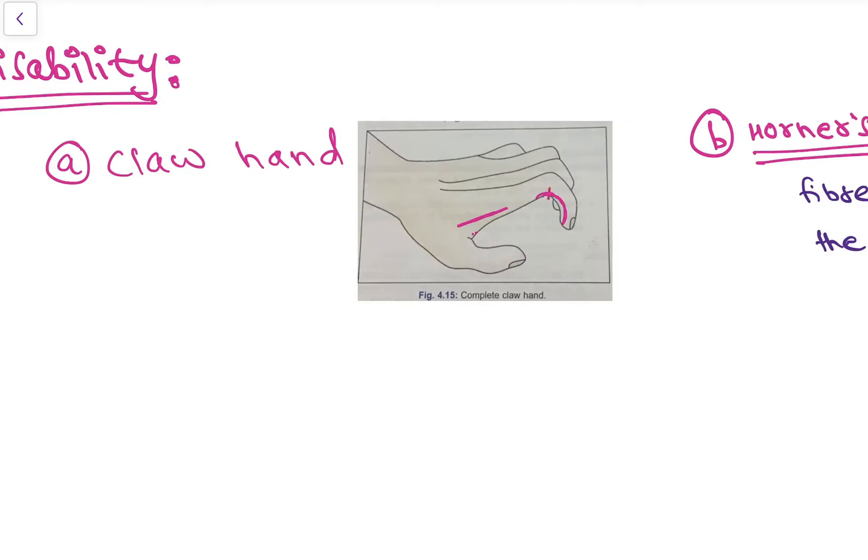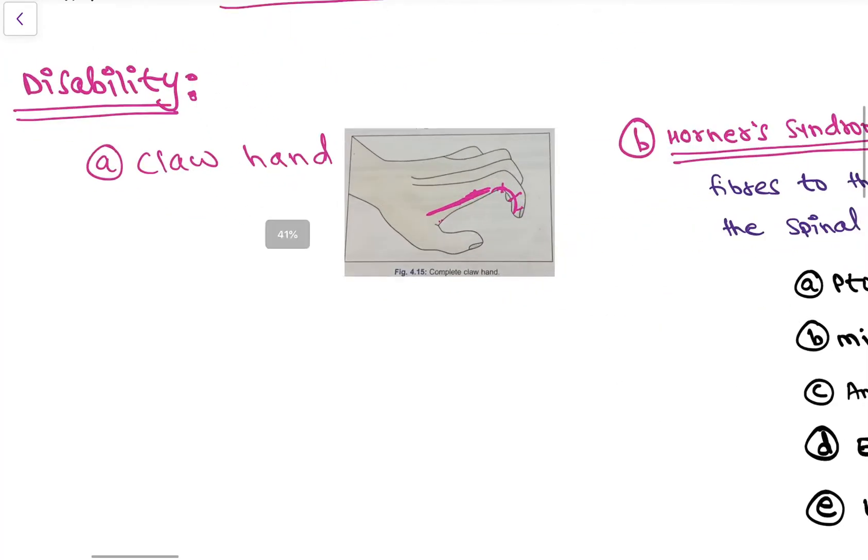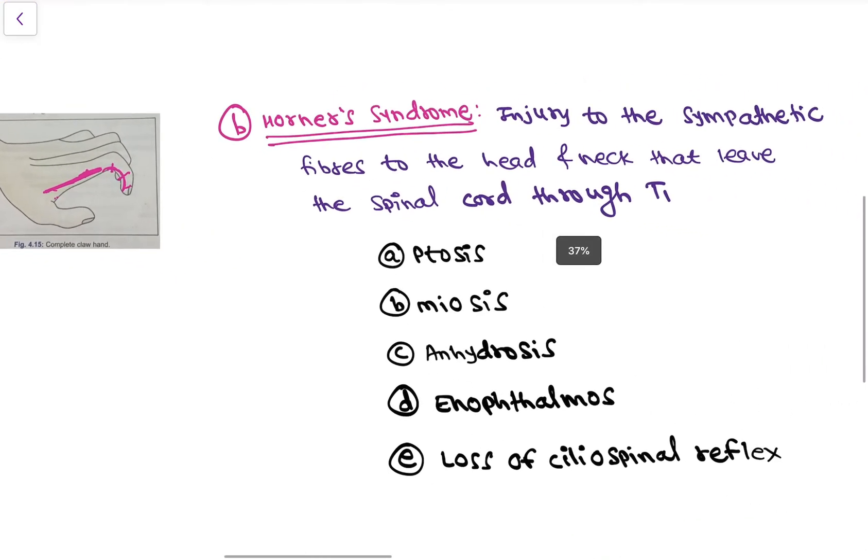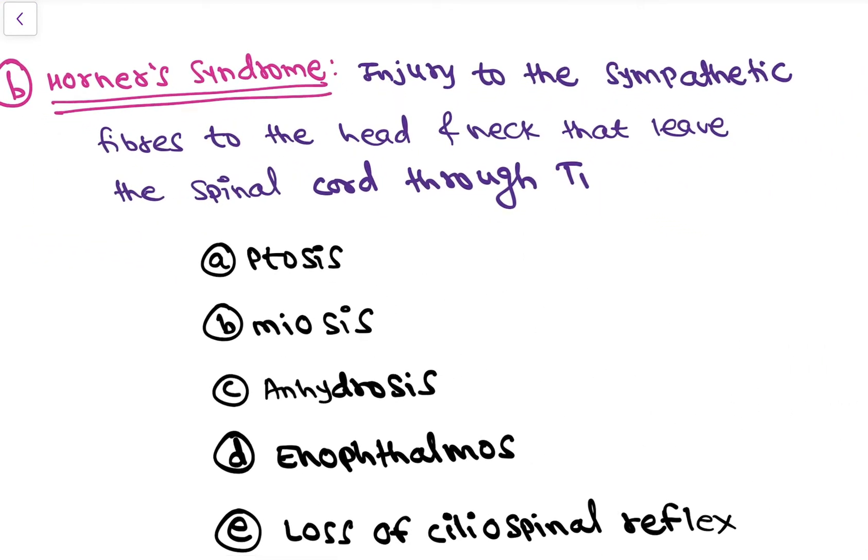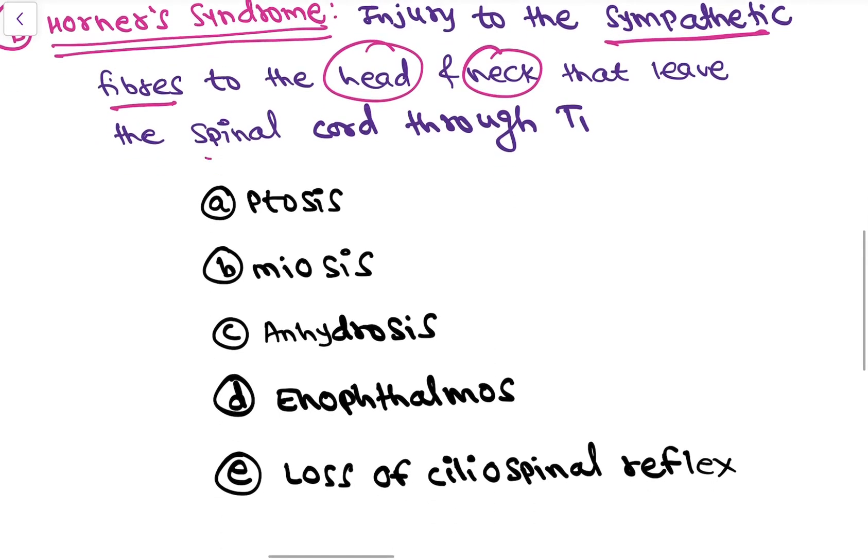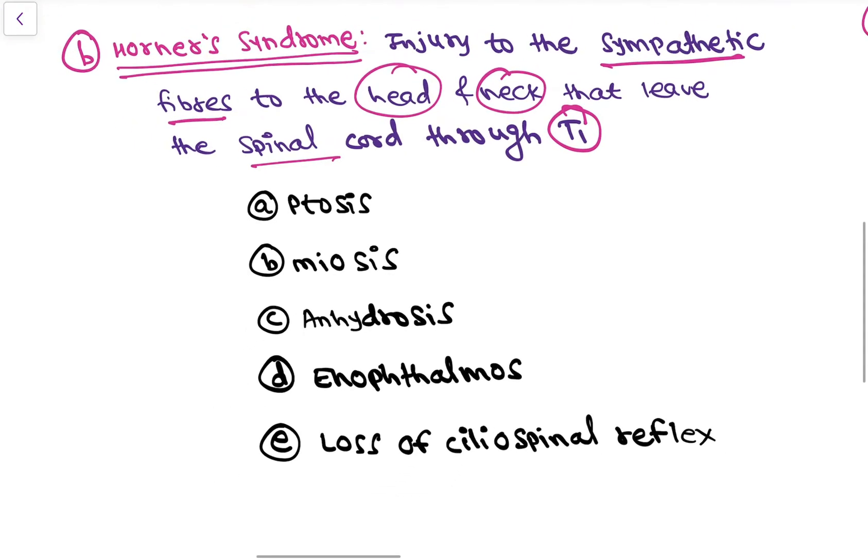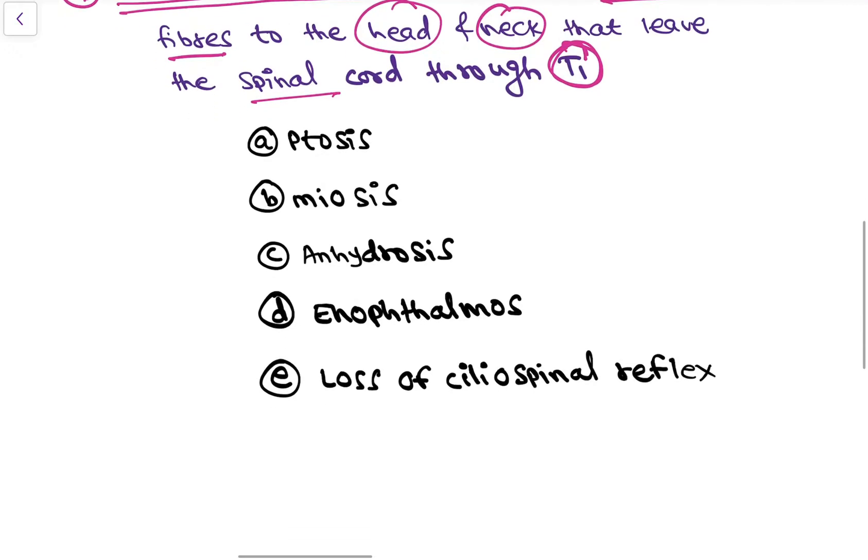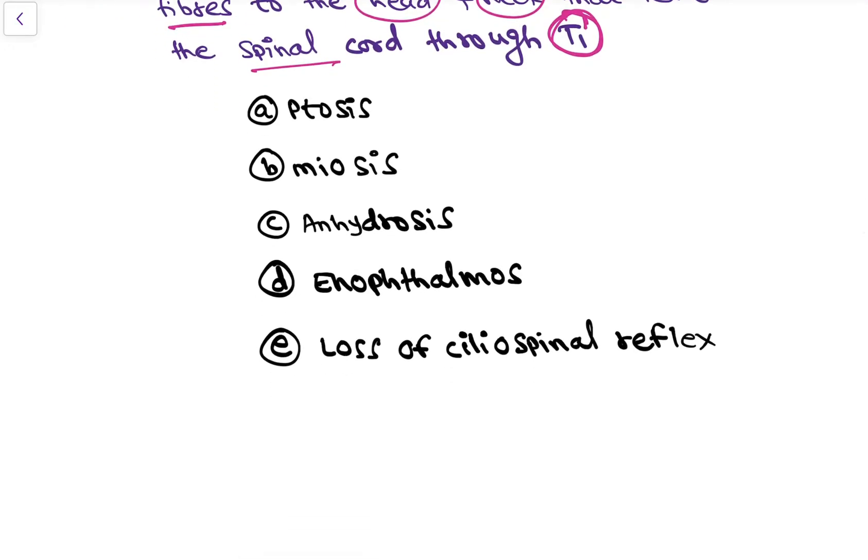So the disability - the first thing is claw hand as we have learned. The second is Horner's syndrome. In Horner's syndrome there is injury to the sympathetic fibers to the head and neck that leave the spinal cord through T1. So when there is injury to T1 then it causes Horner's syndrome.